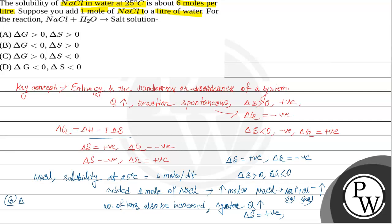We have delta S greater than 0, delta G less than 0. So the answer is option B. I hope you understand it well. Thank you.